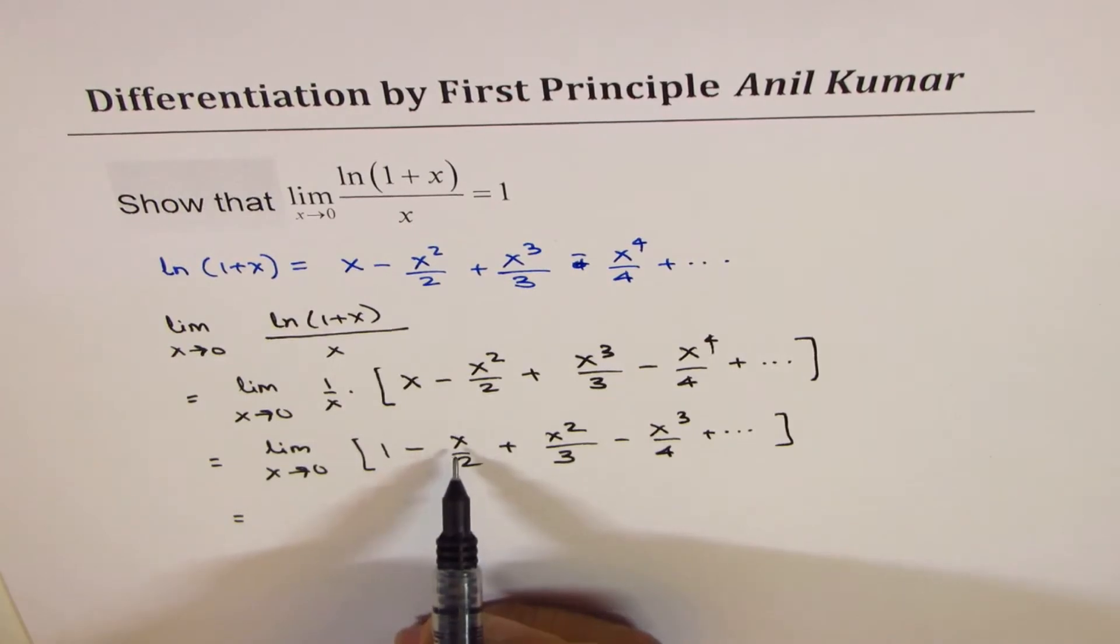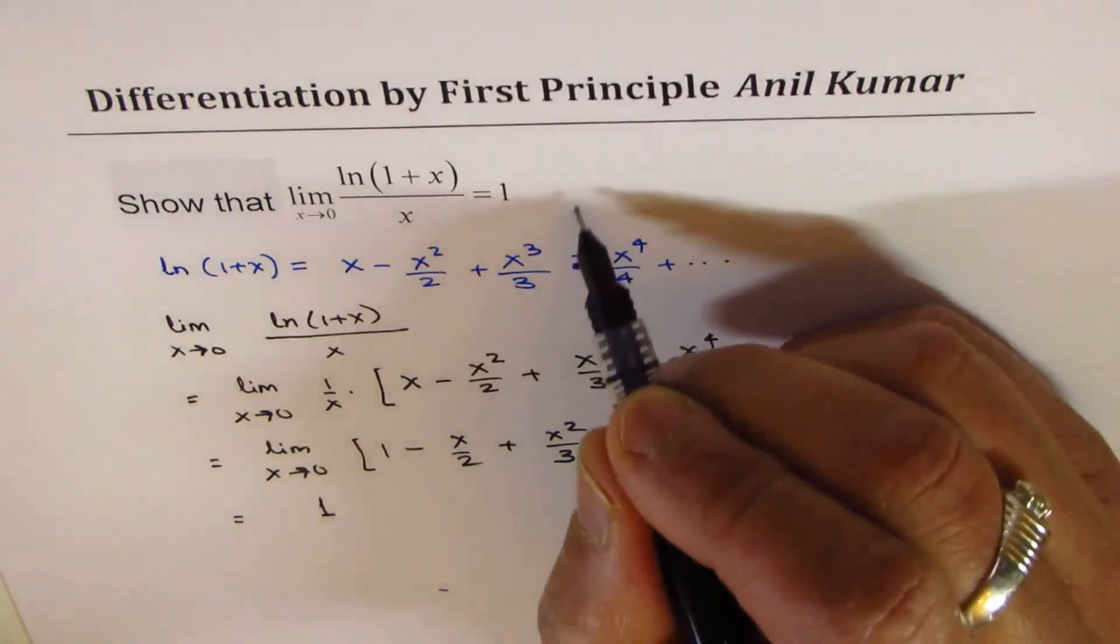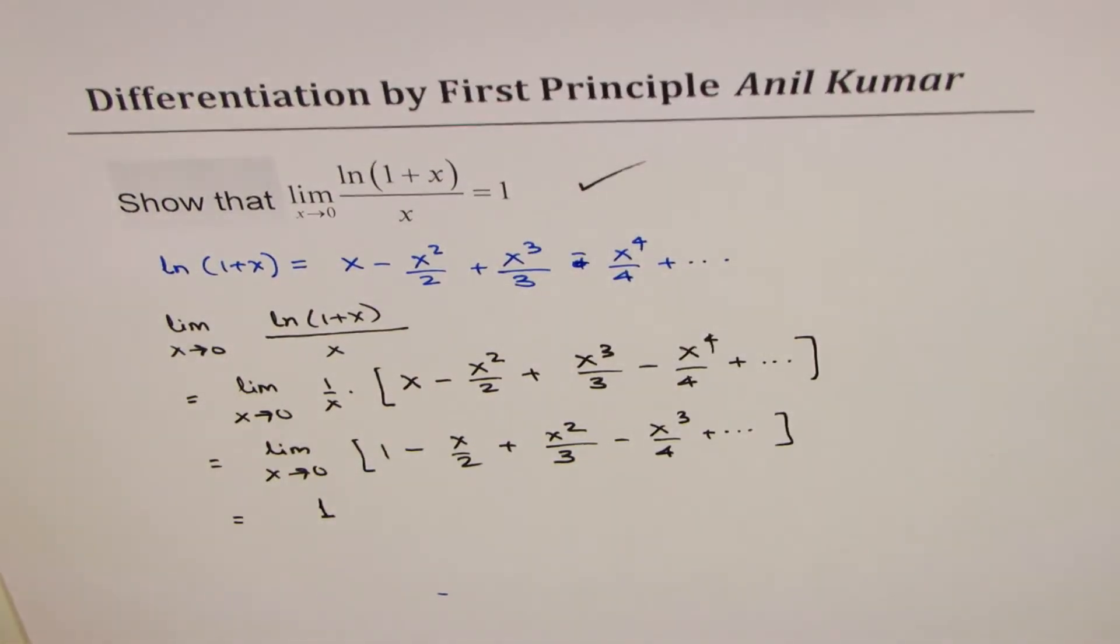Now if I substitute 0, all these terms will be 0 and we are left with 1. So we get 1 as our limit. So that is how very easily you can prove this particular limit.